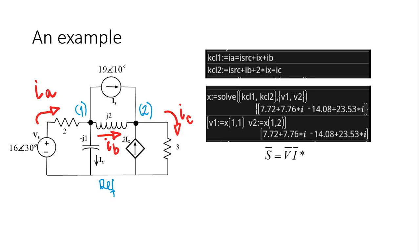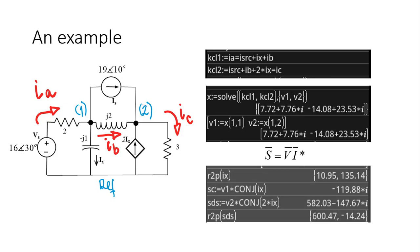And we can ask directly using Steinmetz complex power formula, what is the polar form of the current ix? Rectangular to polar of ix. Oh, that is 10.95 amperes with 135 degrees.